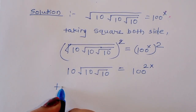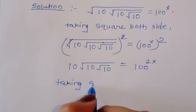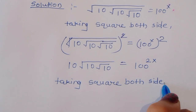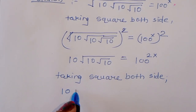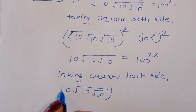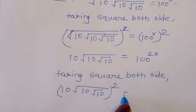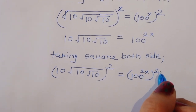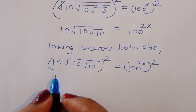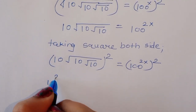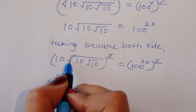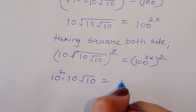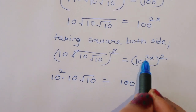Now again we can take square. Taking square both sides: 10, square root of 10, square root of 10, whole square is equal to 100 raised to 2x, square. Now we can write this: 10, square root of 10, whole square root of 10 is equal to 100 raised to 4x.